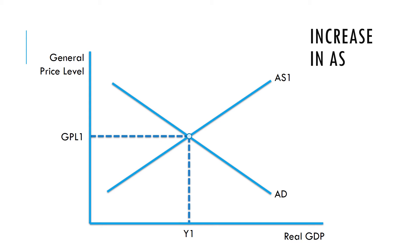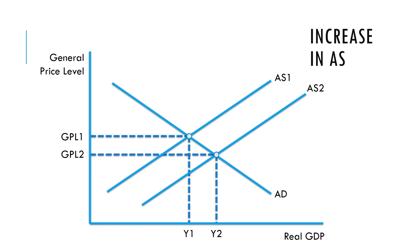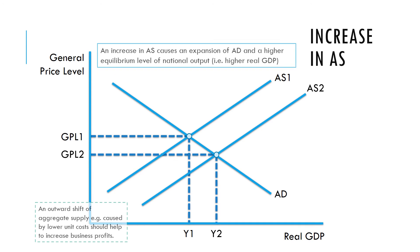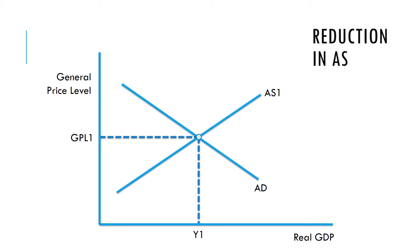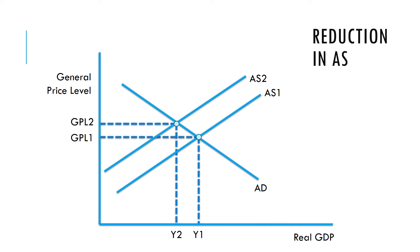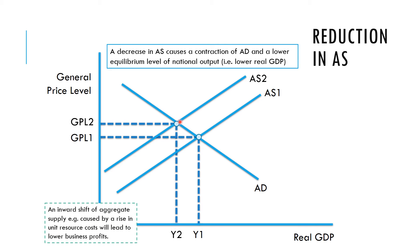We can also use this model to look at changes in aggregate supply. An increase in aggregate supply would move the economy to a new equilibrium at price level 2 and output level Y2, causing an expansion along the AD curve and a higher equilibrium level of national output — this may be caused by lower unit costs, helping to increase business profits. A reduction in aggregate supply decreases output and raises the price level, causing a contraction along the AD curve and a lower equilibrium, possibly due to a rise in unit costs.